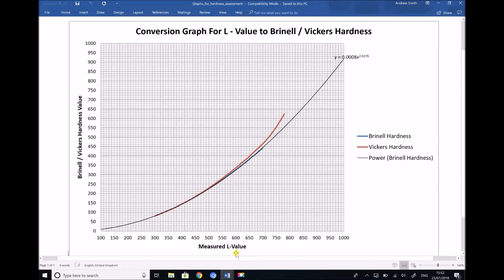Now on this graph along the x-axis we have the measured L value and for this we're going to be using our average values. And on the y-axis we have Brinell slash Vickers hardness value. And what you'll notice from the legend on the right hand side is that the blue line represents Brinell hardness and the red line represents Vickers hardness. We also have an extrapolated power curve on top of the Brinell hardness. And the reason why that's been added is because the data range that we had for this blue line for the Brinell hardness was limited and it only ran from L values of 300 up to around 700.